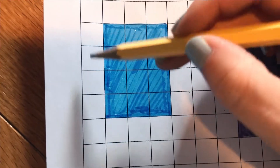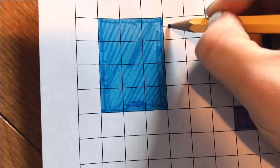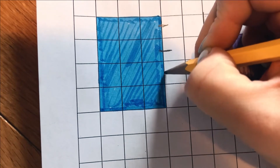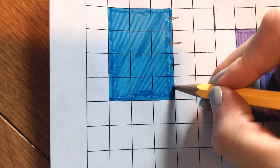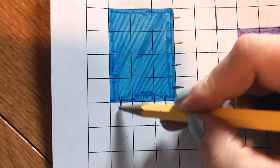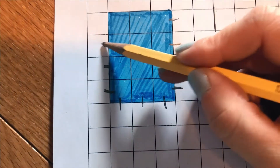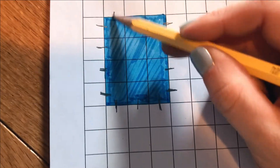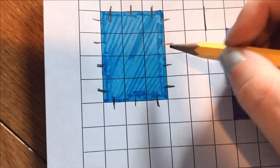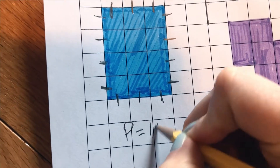So I'm going to go around the outside counting all of these side lengths. So 1, 2, 3, 4, 5, 6, 7, 8, 9, 10, 11, 12, 13, 14. So I know for the blue shape the perimeter equals 14.